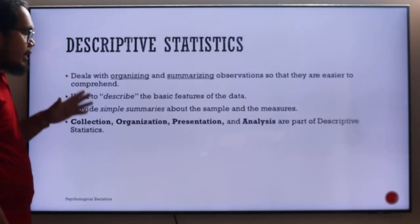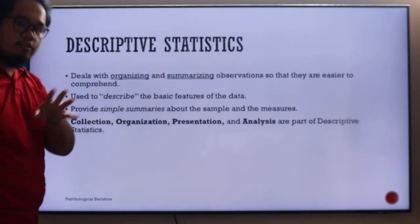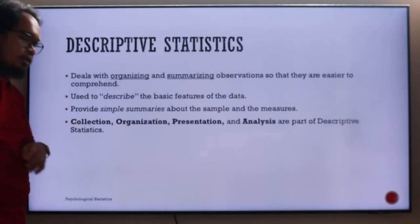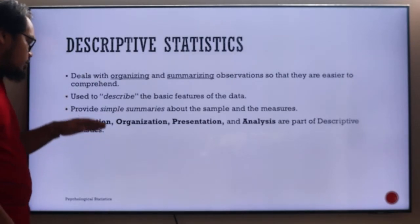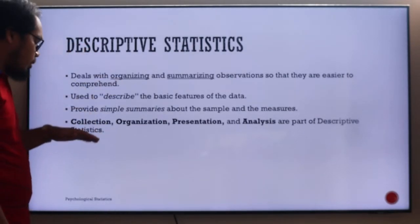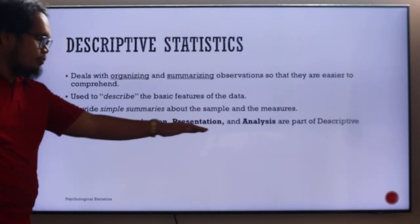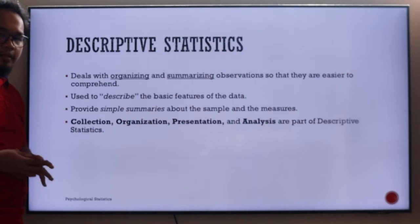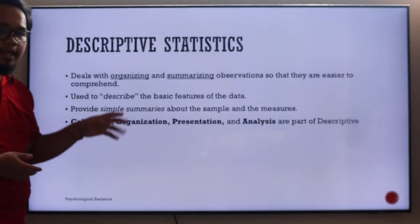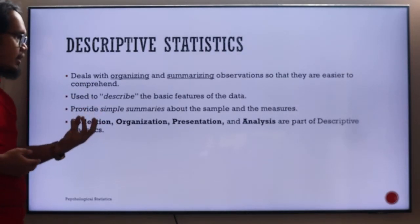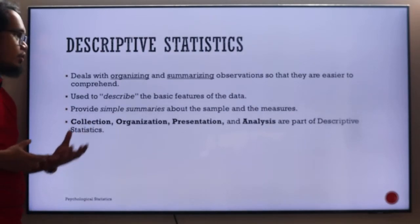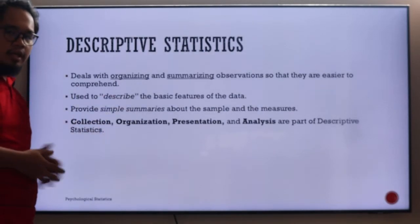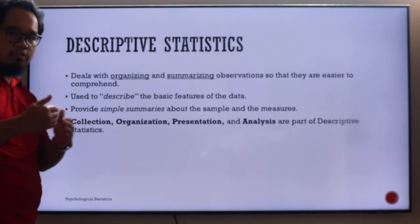So, when we describe things, we only use the first four words there. When we apply descriptive statistics, we only collect, organize, present, and analyze data. We cannot interpret yet because we're only having this small group of ours. We cannot describe whatever is outside the group, so we do not interpret.